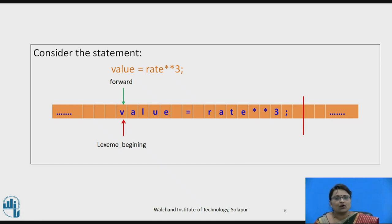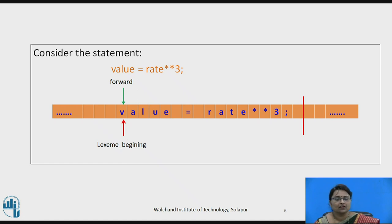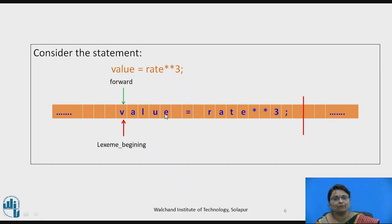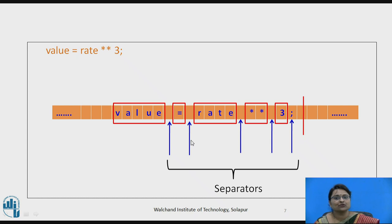The buffer has two pointers: one is the lexeme beginning pointer and the other is the forward pointer. The lexeme beginning always points to the start of the lexeme that is going to be matched with a pattern to generate a token. The forward pointer moves one by one until the end of the lexeme is reached. From lexeme beginning to the forward pointer, one complete lexeme is identified, matched with a pattern, and a token is generated.